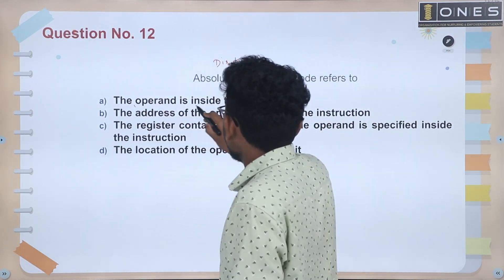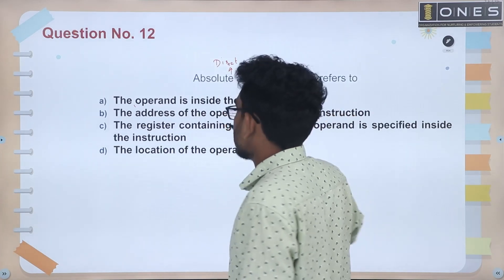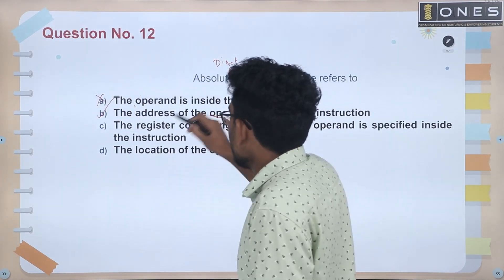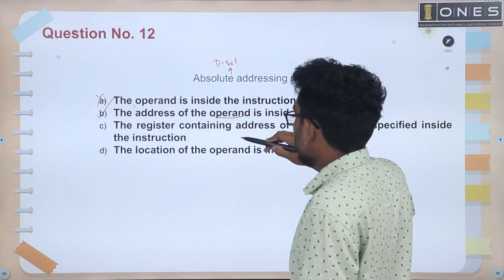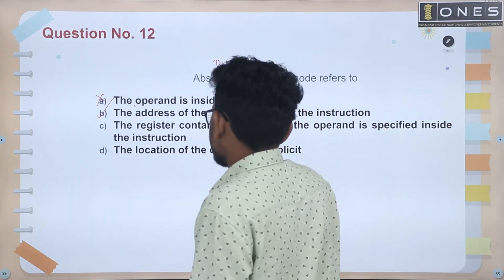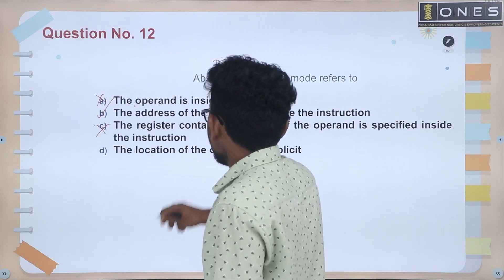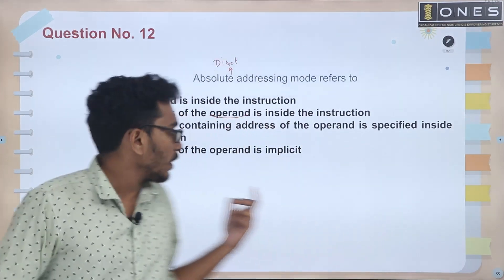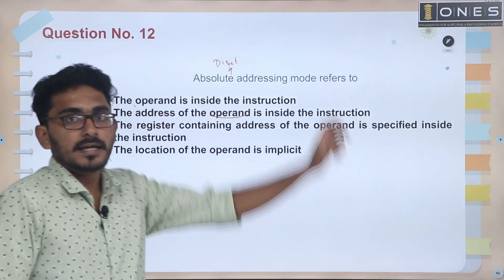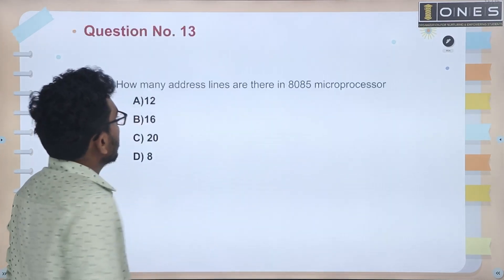For example, the operand is inside the instruction, or the address of the operand is specified inside the instruction. The register containing the address of the operand is specified inside the instruction. Absolute addressing mode refers to direct addressing mode.